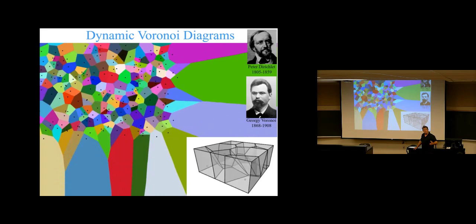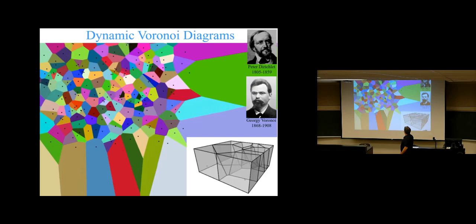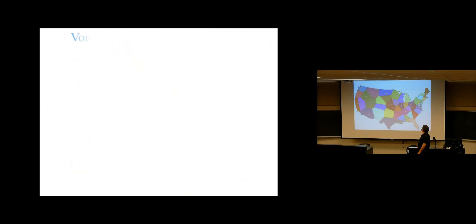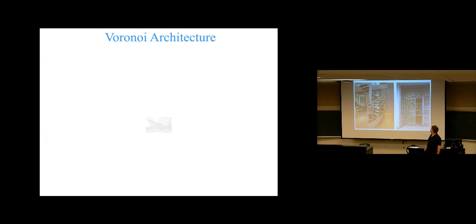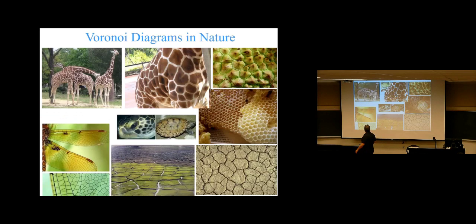It works in different metrics, not just the Euclidean. There are dynamic versions that allow points to move and still keep the Voronoi diagram maintained properly, even when points are inserted or deleted, as well as moving around. There are entire conferences on this subject. A lot of art and architecture incorporates Voronoi diagram motifs — it's very ubiquitous. Even nature has Voronoi-like structures.